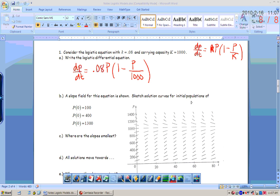A slope field for this equation is shown. Sketch solution curves for initial populations of 100, 400, and 1300. If your initial population is 100, then that means when time is zero, we're starting about right here. If you draw the slope field, you just want to basically follow up through there. If you're starting at 400, something like that. And you always want to extend your graph to the edge of the slope field.